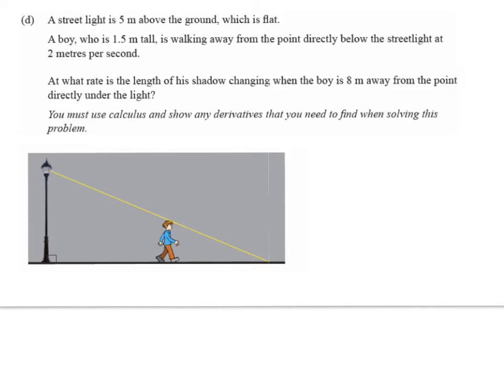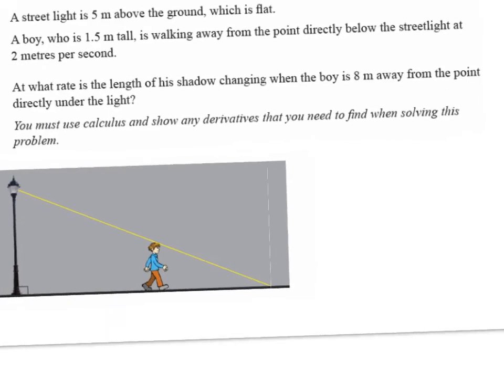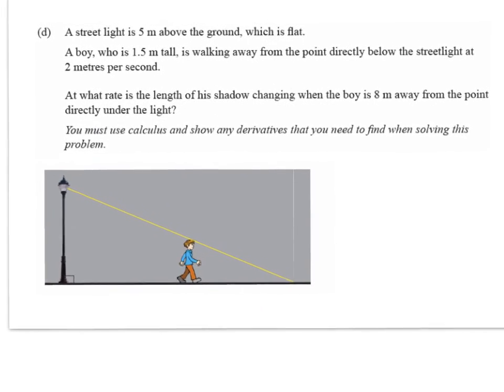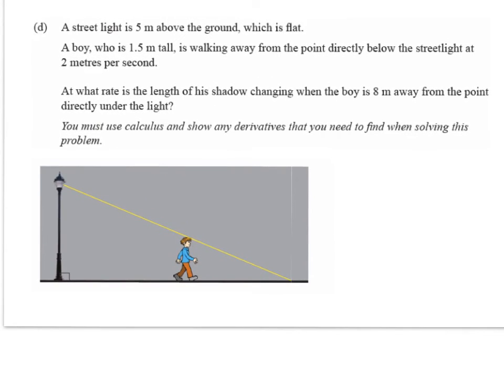As I've said in the last video, when we get questions like this, we've got to read them really carefully. A streetlight is 5 metres above the ground, which is flat. A boy, who is 1.5 metres tall, is walking away from the point directly below the streetlight at 2 metres per second.